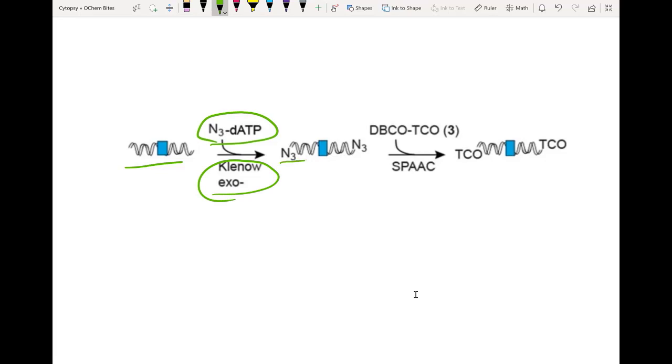After the azide is added onto the DNA then you can react it with DBCO-TCO which stands for dibenzocyclo-octene PEG transcyclo-octene. So what you can see is this is a cyclo-octene which is used for click chemistry and this is a transcyclo-octene which can react with our tetrazine.